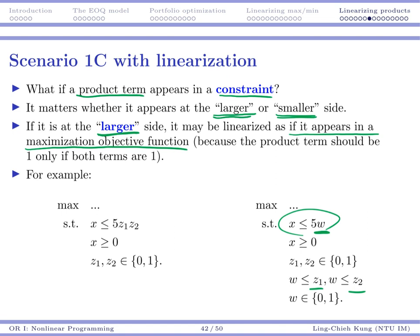So you need to set some upper bounds for w such that w can be 1 only if your z1 and z2 are 1. The product term should be 1 only if both terms are 1.